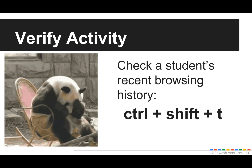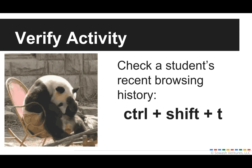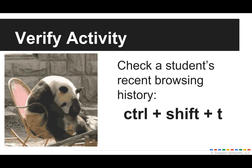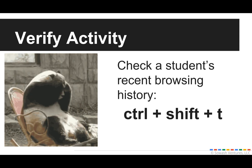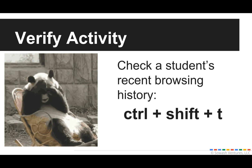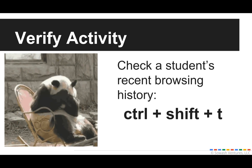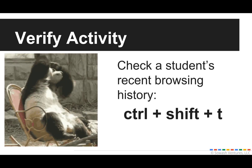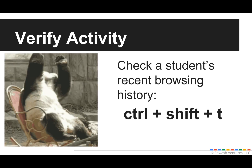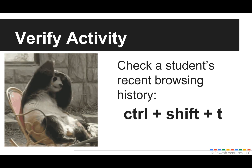The reason we block anonymous browsing is because you have the ability to verify the actions of your student while they're in class with you. This is a standard feature of the Chrome browser, not specific to Chromebooks. If you walk up to a student and see them frantically closing all of the tabs they had open so you don't know where they've been, all you have to do is press three keys on their keyboard: Control, Shift, T.